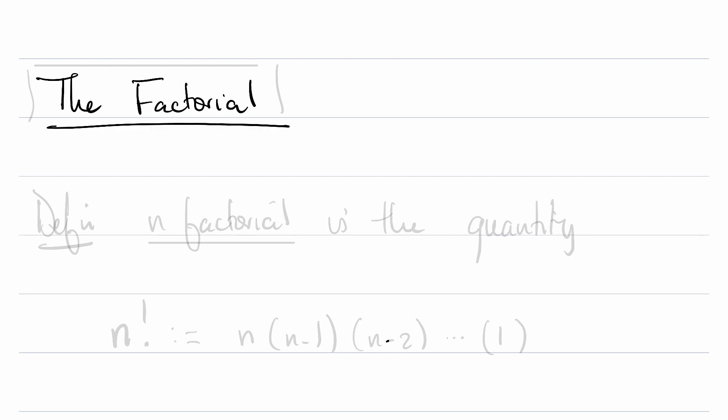Let's talk about the factorial definition. n factorial is the quantity denoted n with an exclamation mark,